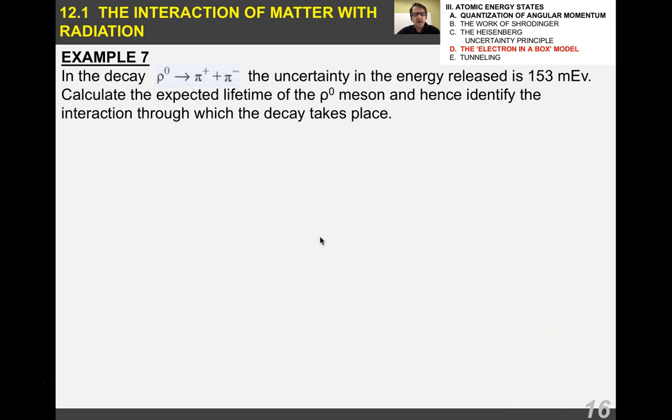Here's an example of how you would use the other version, E delta T of the Heisenberg uncertainty principle. Give this one a try. Sorry, the example numbers are kind of messed up here in this video, but you get the idea. So I have a decay. The uncertainty in the energy release is 153 milli electron volts. Calculate the expected lifetime of the rho-naught meson, and hence identify the interaction through which the decay takes place.